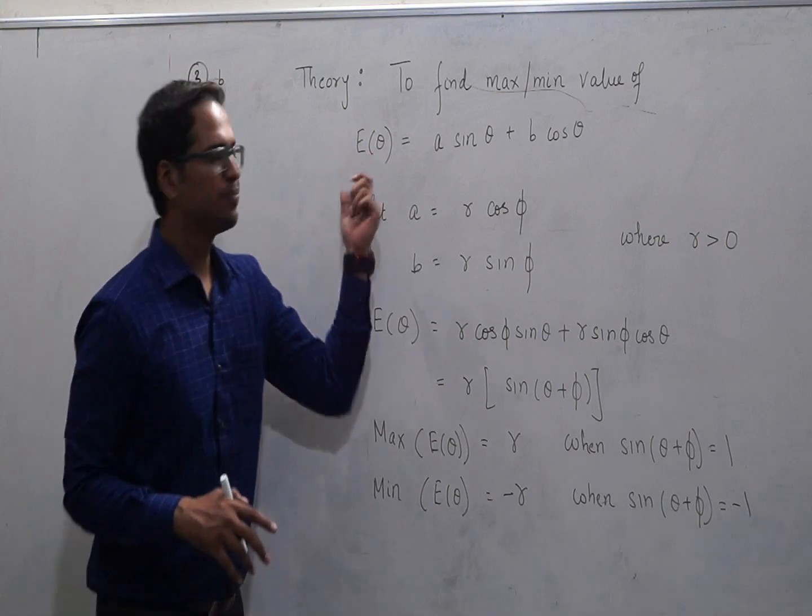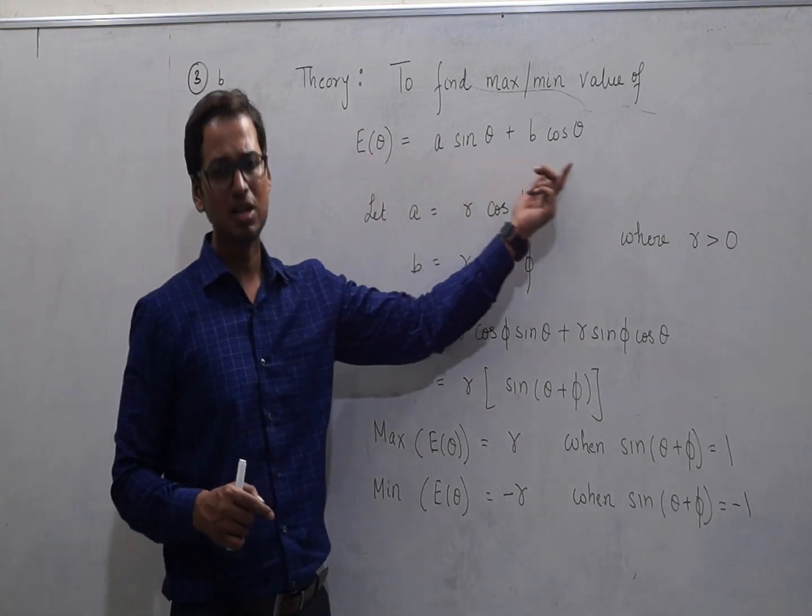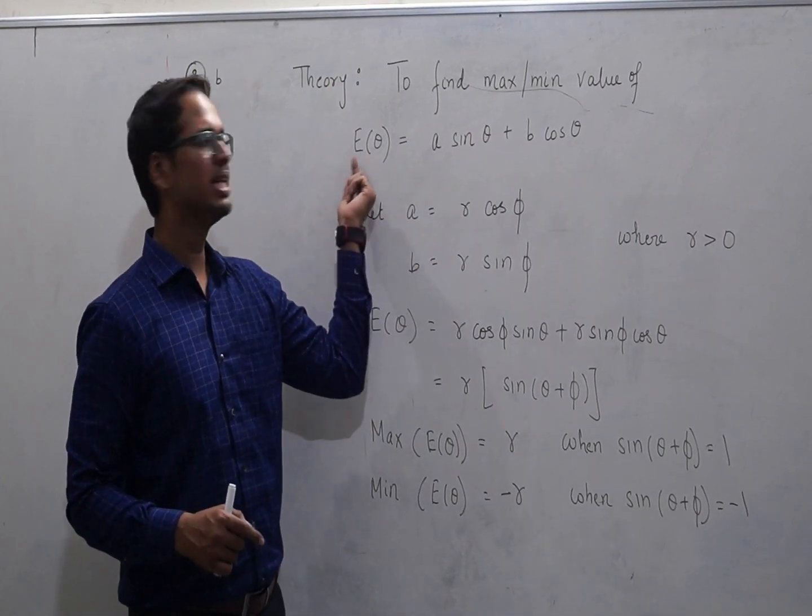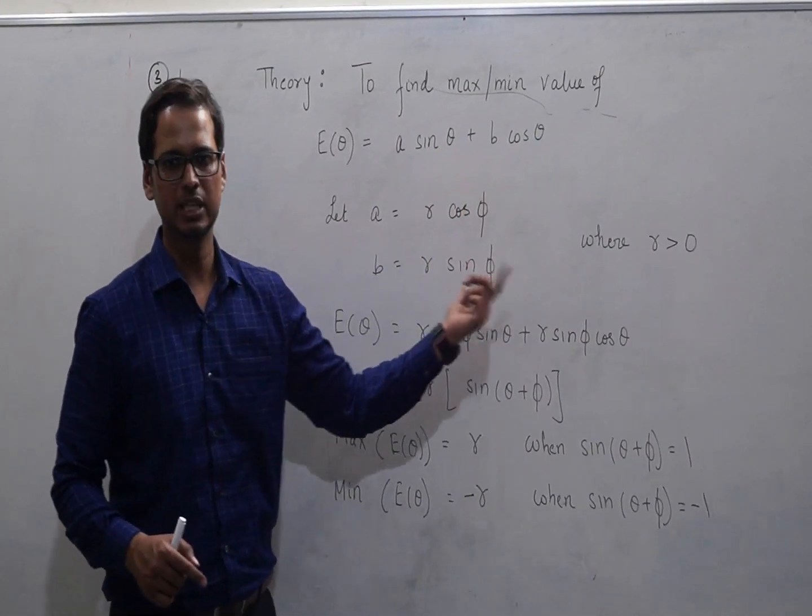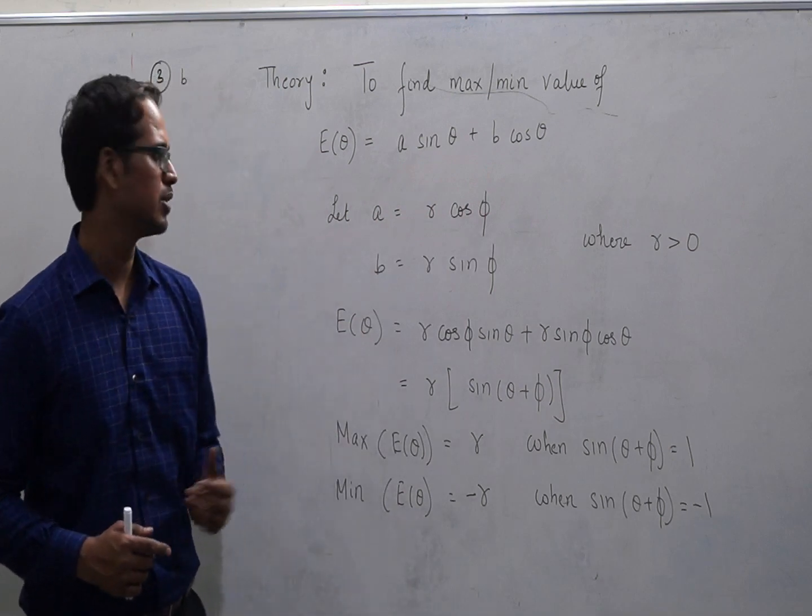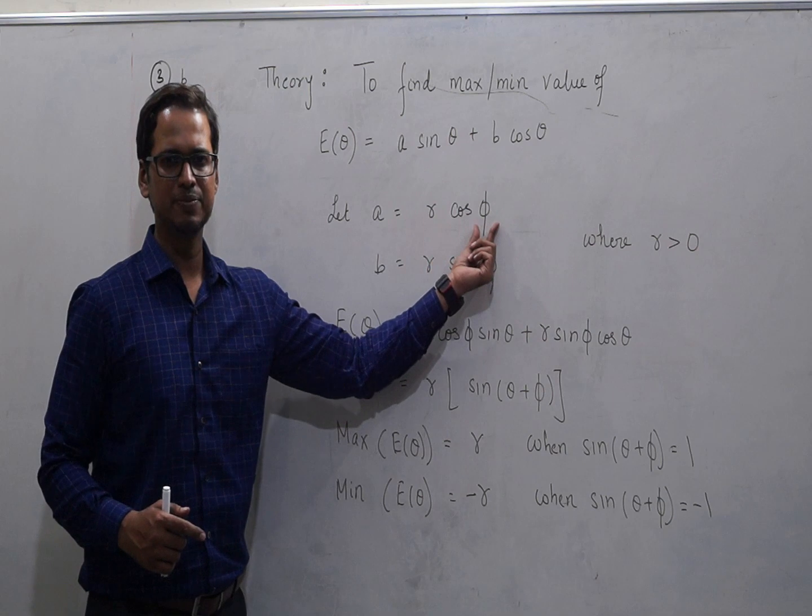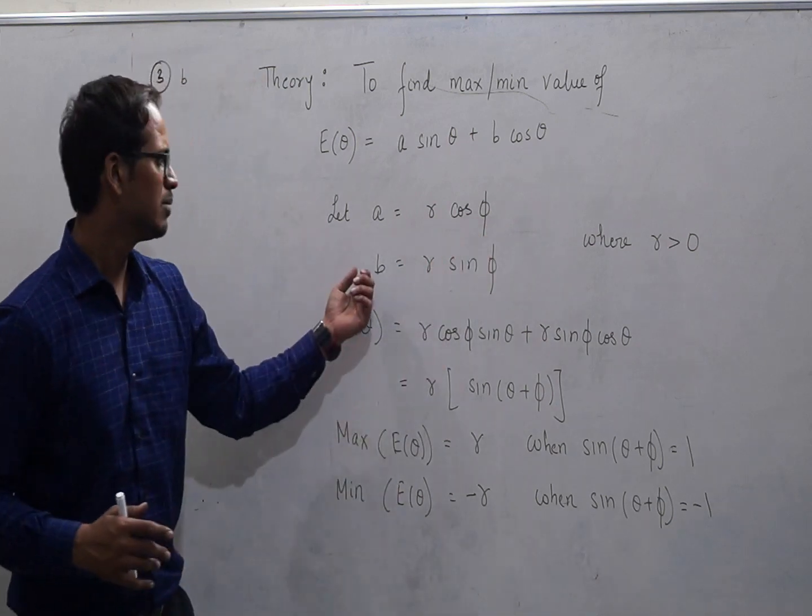Let's say we have a question at our hand that we want to find the maximum or the minimum value for this expression E theta. Basically, I am naming it as a function E theta because this expression has been written in terms of theta. Now, to find the maximum or the minimum value of this expression, we assume a to be some r cos phi where phi is some angle and r is some positive value.